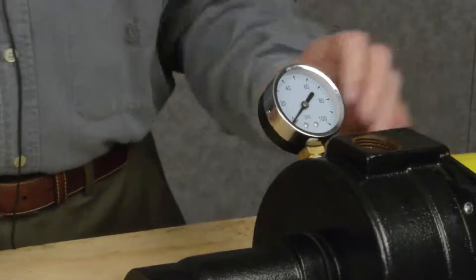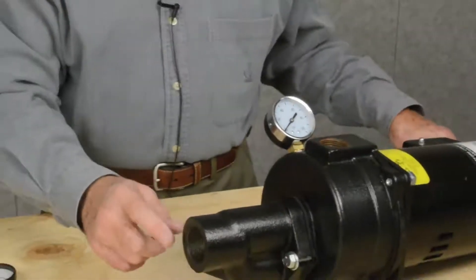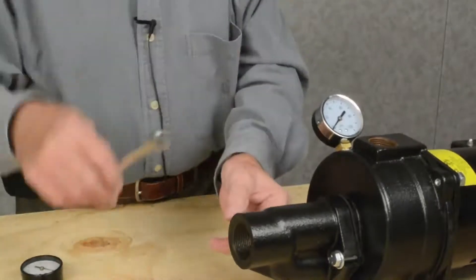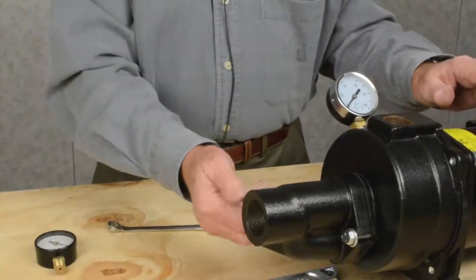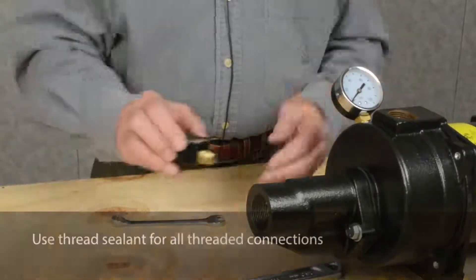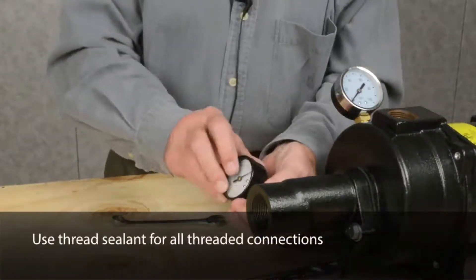Again, use thread sealing on that. This plug is for your vacuum gauge. Take this plug out. You're going to insert your vacuum gauge in this tapping right here.